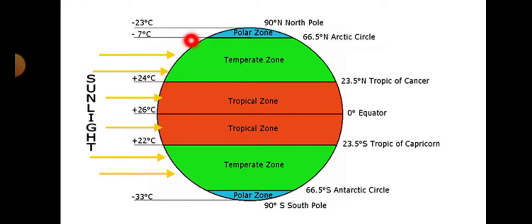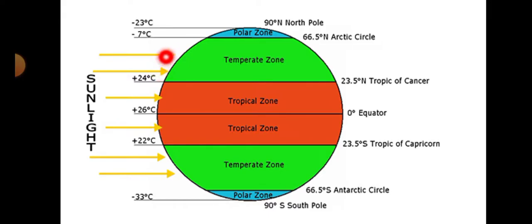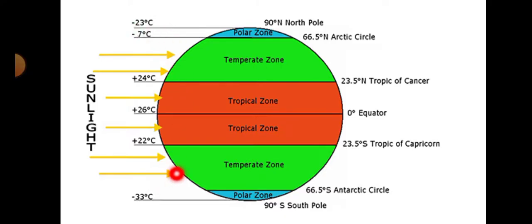These regions receive different amounts of solar radiation due to the angle of the sun and the curvature of the Earth. The tropical zone receives the highest amount of temperature throughout the year. The temperate and polar zones receive medium and low temperatures respectively — so the tropical zone is very hot, temperate is medium, and the polar zone is very cold. For example, the North Pole's extreme point indicates minus 23°C and the South Pole indicates minus 33°C.